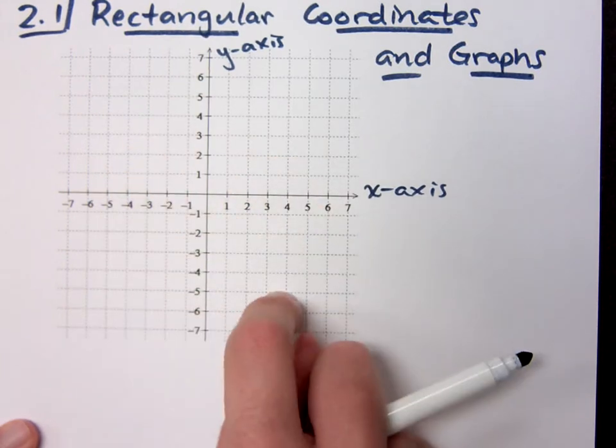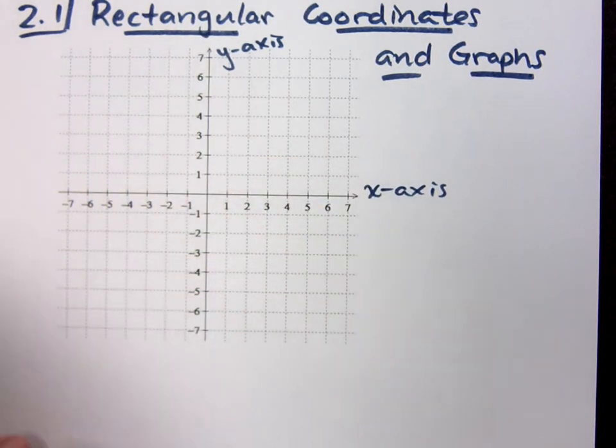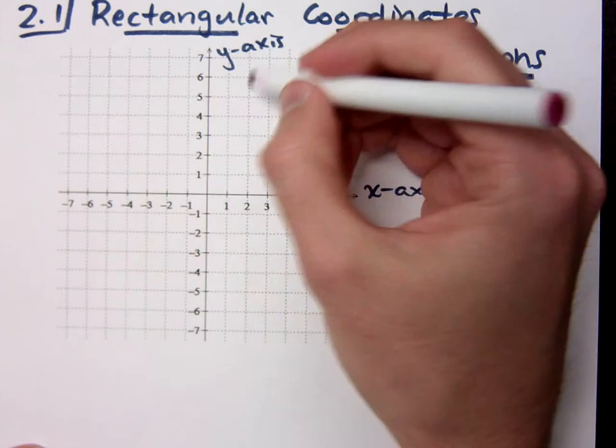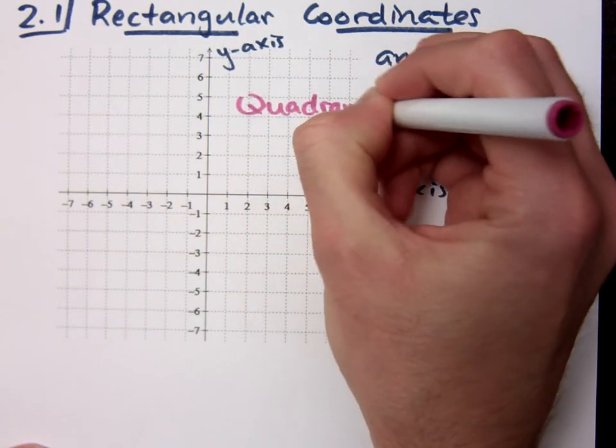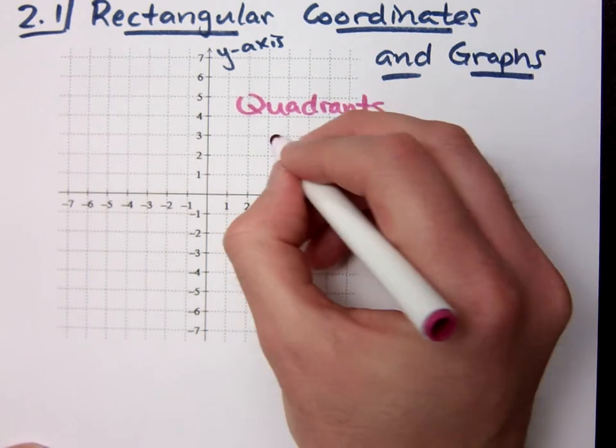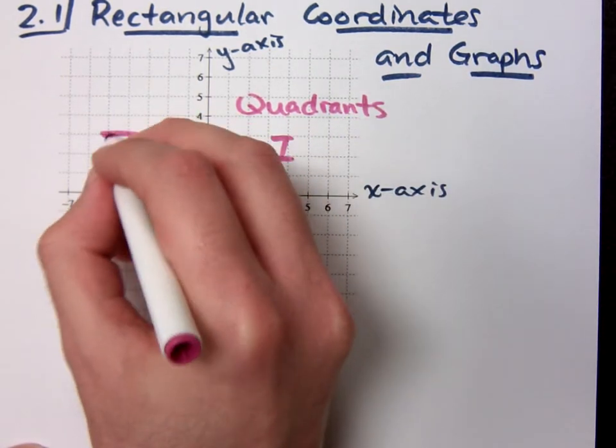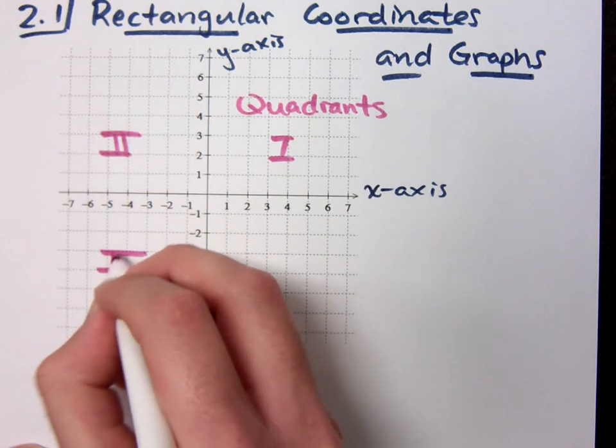It creates four different sections called what? These are called quadrants. So you've got quadrants. You've got them labeled 1, 2, 3, and 4.